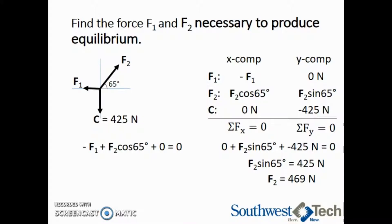Now that we know what F2 is, we can substitute that in for F2 in the x side of things and solve for F1. Rearranging, we see that F1 is equal to 469 multiplied by the cosine of 65 degrees. This means F1 is equal to 198 newtons. This concludes our example of finding missing forces using the idea of equilibrium.